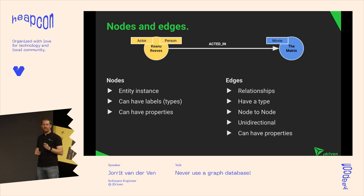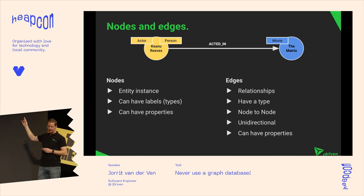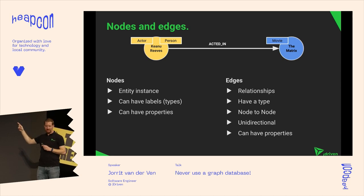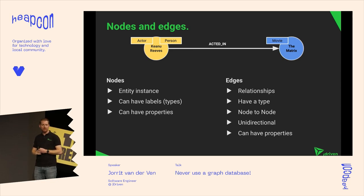Edges are always defined unidirectionally — Keanu Reeves ACTED_IN The Matrix — though that doesn't mean you can't query them the other way around, because you can. You always define them in one direction. Edges can also have properties, so for example ACTED_IN could have a property "role".